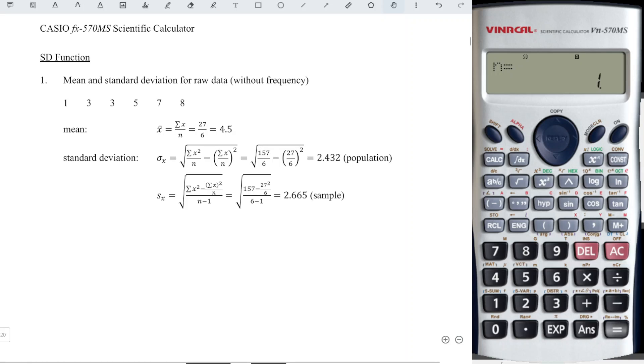For the second observation, 3, also the same, we press 3 followed by M plus. Then 3 M plus, 5 M plus, 7 M plus, 8 M plus. All together we have six observations as we can see here. Press AC before we proceed.